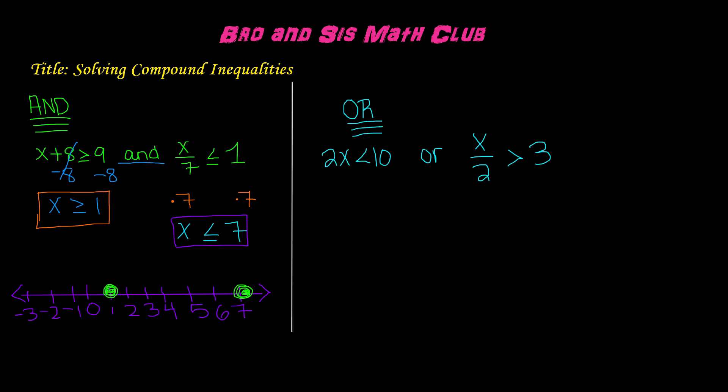Since this is an 'and' compound inequality, the solution will be in between these two points, so we will shade in between them. x is greater than or equal to 1, meaning the solution could be 1 or greater, and x is less than or equal to 7, so it could be 7 or less. All the solutions to this compound inequality are in between these two points.